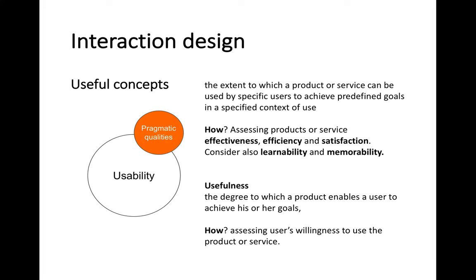Usability means the extent to which a product or service can be used by specific users to achieve predefined goals in a specific context. It means we focus on assessing and evaluating a specific product and service across three main dimensions: whether the product is effective, efficient, and satisfactory. Sometimes we also consider learnability and memorability. We can go further and measure usefulness — the degree to which a product enables users to achieve their goals — assessing users' willingness to use a product or service.